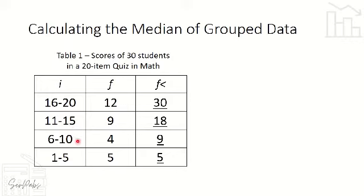Nine students scored 10 and below, and 5 students scored 5 and below. So our cumulative frequencies are: 5 and below is 5, 10 and below is 9, 15 and below is 18, and 20 and below is 30 — since all 30 students scored within a 20-item quiz.